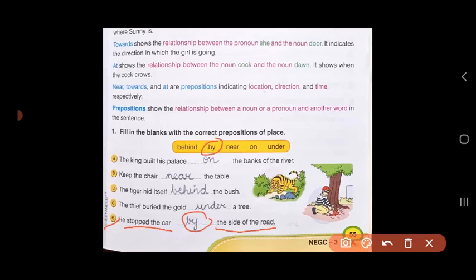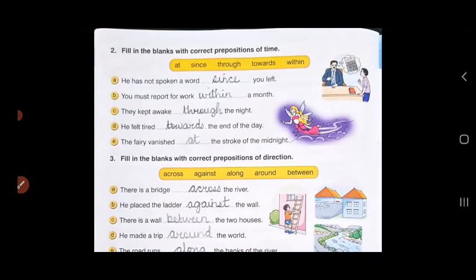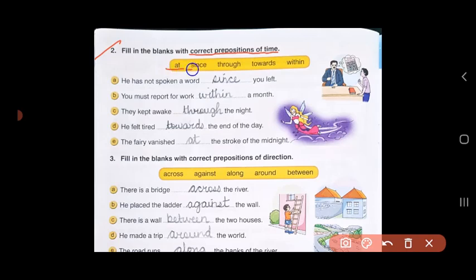B. You must report for work within a month. C. They kept awake through the night. D. He felt tired towards the end of the day. E. The fairy vanished at the stroke of midnight.